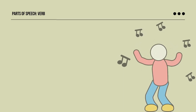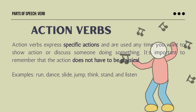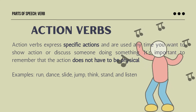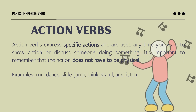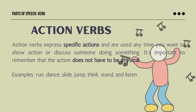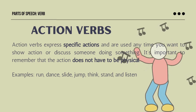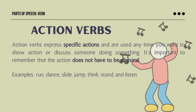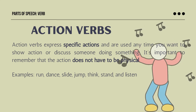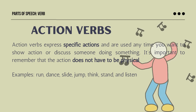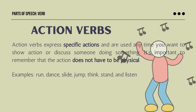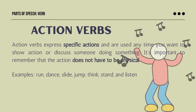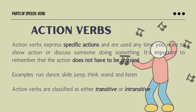Action verbs express specific actions and are used anytime you want to show action or discuss someone doing something. It's important to remember that the action does not have to be physical. Action verbs are the specific actions that someone or something is doing — for example, jump is a specific action, and also think and listen are specific actions. Think and listen do not have to be physical, but they are still considered action verbs. Action verbs are classified as either transitive or intransitive.